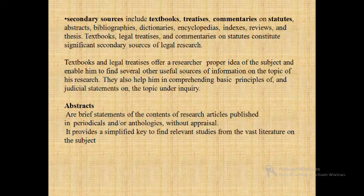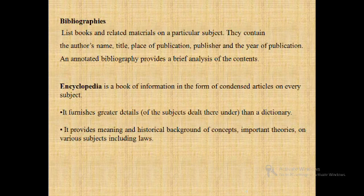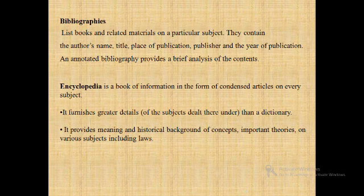Abstracts are brief statements of the contents of research articles published in periodicals and provide a simplified key to relevant studies from the vast literature on the concerned subject. Bibliographies refer to lists of books related to the topic — they contain the author's name, title, place of publication, publisher, year of publication, and an annotated bibliography provides a brief analysis of the content. The encyclopedia refers to book information in the form of condensed articles on every subject. It furnishes greater detail on a subject than a dictionary and provides meaning and historical background relating to concepts and important theories on various subjects including law.